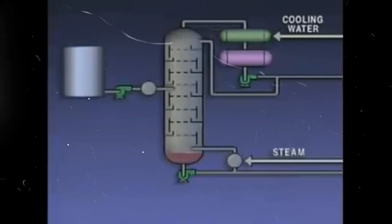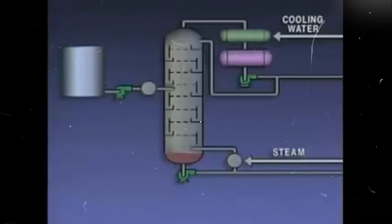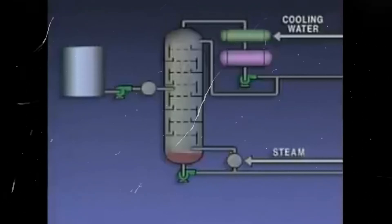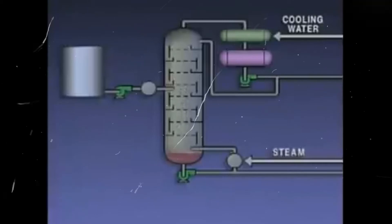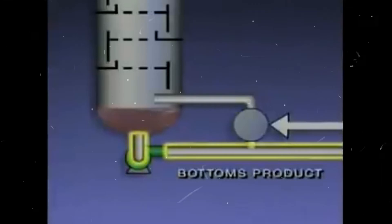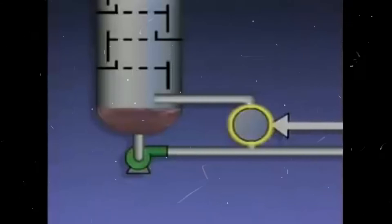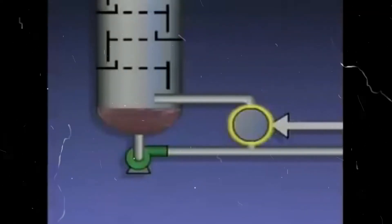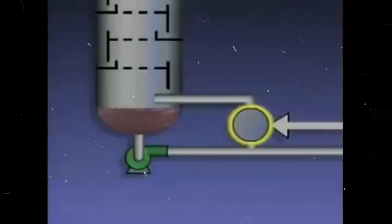The vapors from the boiling liquid, which primarily contain the lighter components in the feed, rise in the tower. The remaining liquid, which consists primarily of the heavier components in the feed, moves down the tower and collects at the bottom. Some of this liquid is drawn off as the bottoms product. Some of it is routed to a device called a reboiler, which is connected to the bottom of the tower. The reboiler is usually a heat exchanger designed to vaporize the lighter components that remain in the liquid at the bottom of the tower.